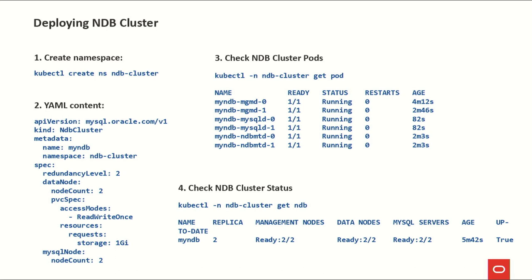This is the process to deploy an NDB cluster using the NDB operator. First, create a namespace: kubectl create ns ndb-cluster. This gives us our own namespace to deploy the NDB cluster. Then we have a YAML manifest where the kind is NDBCluster. Since we deployed the NDB cluster operator, Kubernetes now recognizes NDBCluster as part of its own resources.